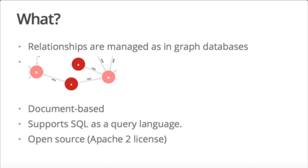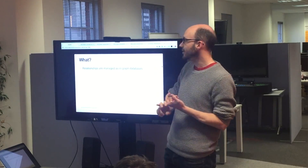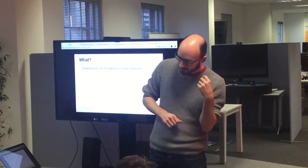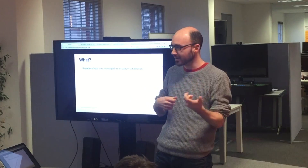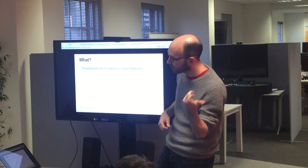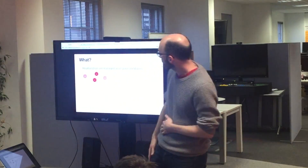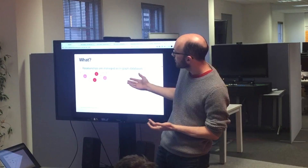So it is a graph database — relationships, as opposed to a relational database where everything's in tables and you have foreign keys and joins. In a graph database you have vertices and edges, and rather than going between primary keys in tables, you go from vertex to edge to another vertex of a different class, as demonstrated in a handy diagram.